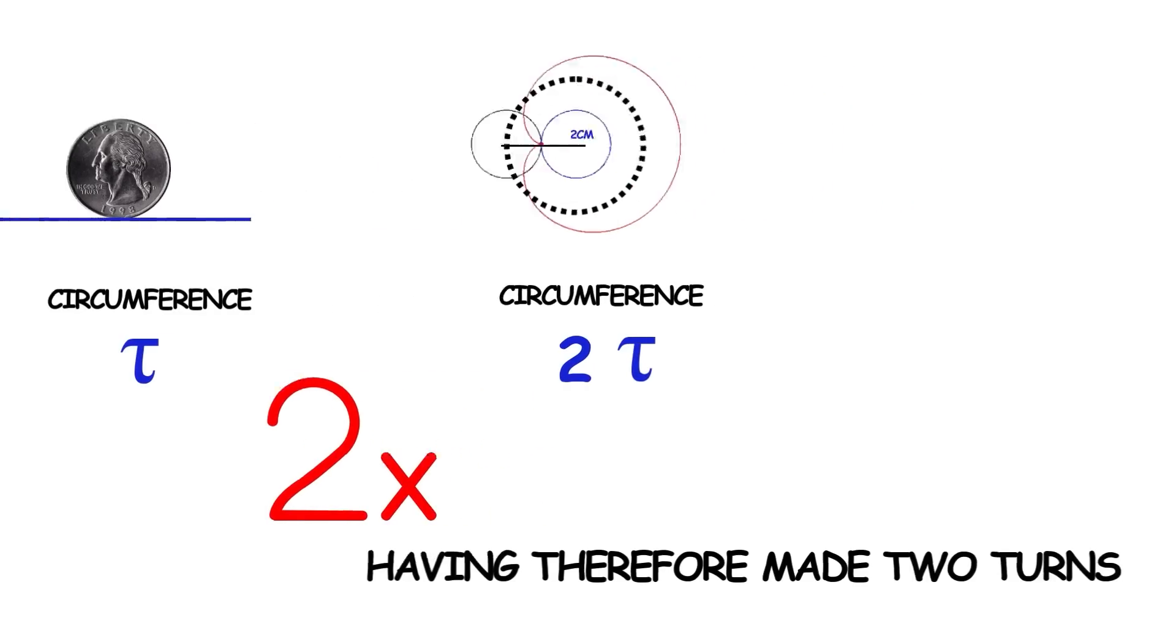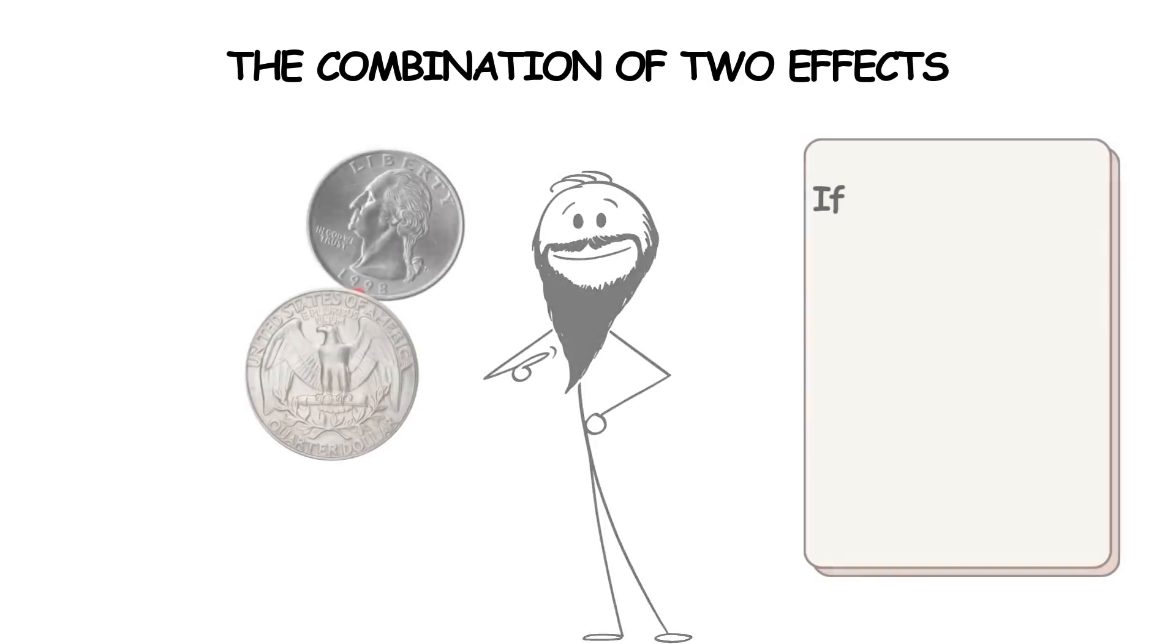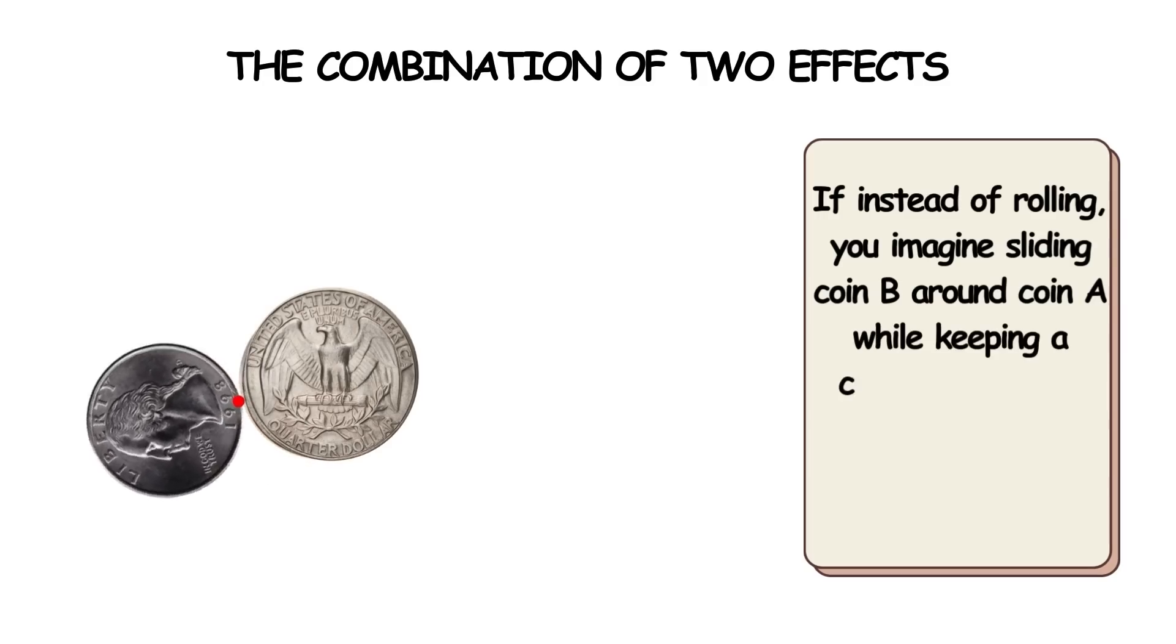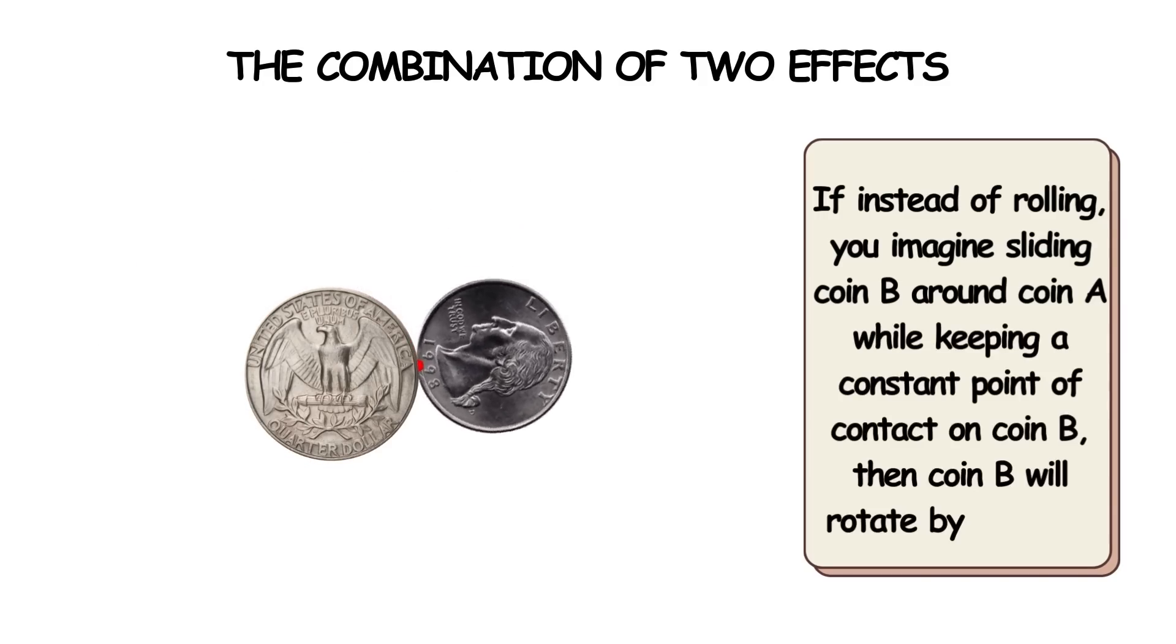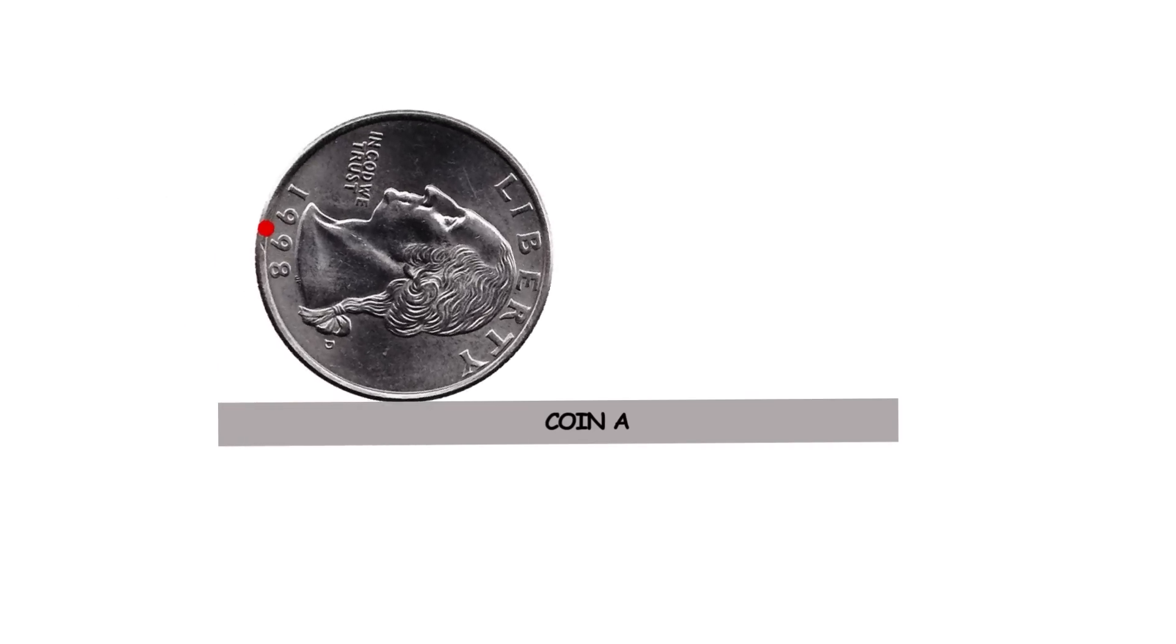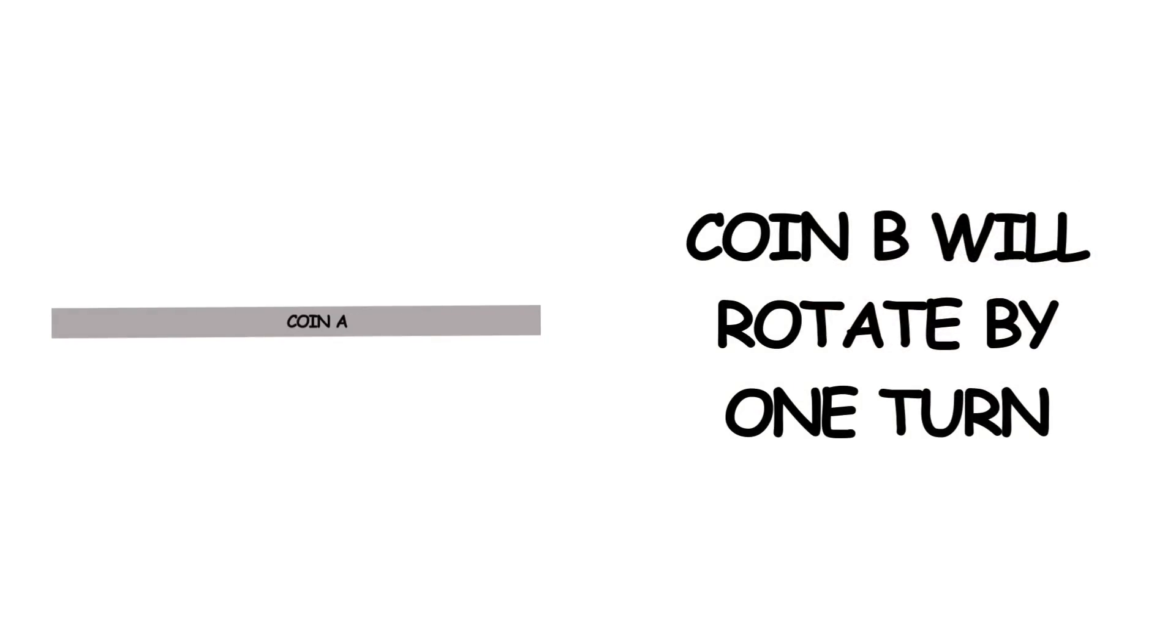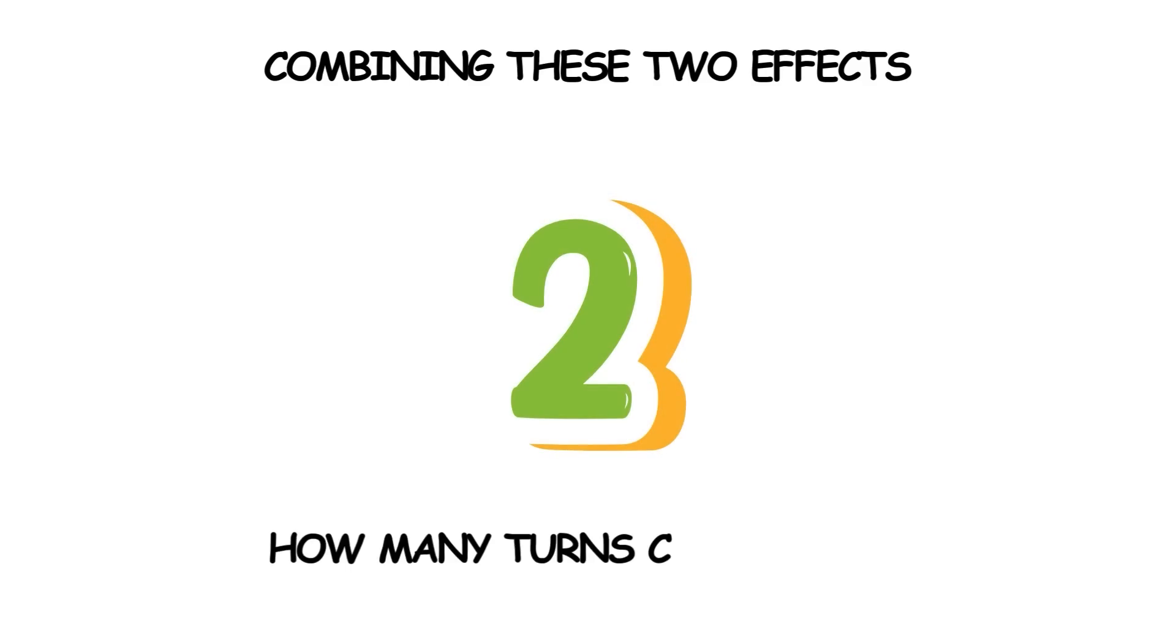Another option is to view the rotation as the combination of 2 effects. If, instead of rolling, you imagine sliding coin B around coin A while keeping a constant point of contact on coin B, then coin B will rotate by 1 turn. Alternatively, if you imagine flattening out coin A and then having coin B roll across it, then coin B will rotate by 1 turn. Combining these two effects, 1 turn plus 1 turn is 2 turns, which is how many turns coin B made.